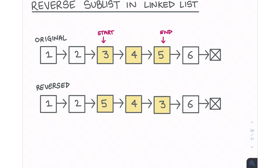For instance, I've highlighted the nodes here which occur between the start and the end positions. In this linked list, we have three, four, and five that occur in between the start and end pointers. What we're supposed to do is reverse those nodes, so three, four, five ends up as five, four, three.